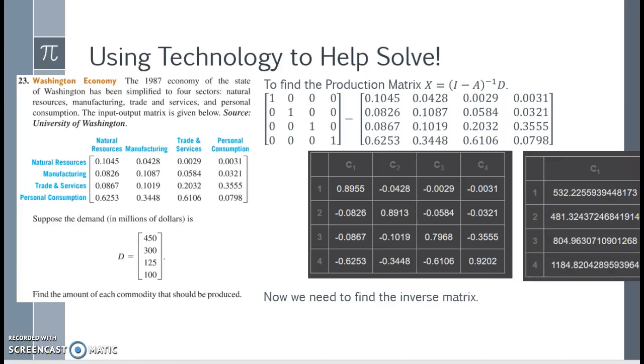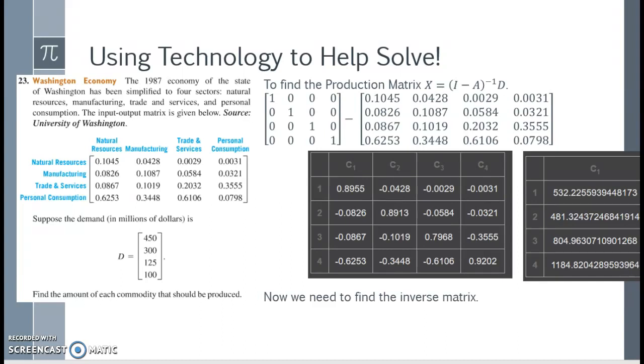Coming full circle, here is our final production matrix. Notice all those decimals. We can certainly round to the nearest whole number. Based on this information, since the top row is natural resources, we should produce 532 units of natural resources, 481 units of manufacturing, 805 units of trades and services, and 1185 units of personal consumption.